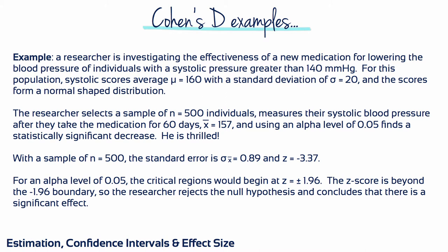Let's go through an example. A researcher is investigating the effectiveness of a new medication for lowering the blood pressure of individuals with a systolic pressure greater than 140 mmHg. For this population, systolic scores average 160, with a standard deviation of 20, and the scores form a normal-shaped distribution. The researcher selects a sample of N equals 500 individuals and measures their systolic pressure after they take the medication for 60 days. He finds a sample mean of 157.